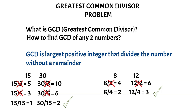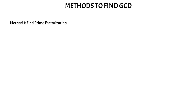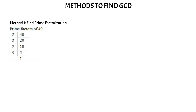Now having understood what a GCD is, let us try to see what are the different methods using which we can find GCD between any two numbers. The first method is to find the prime factorization of that number. We can break a particular number into its prime factorization and after that see what are the common factors between the two numbers. For example, the prime factorization of 40: you divide 40 by 2, then 20 by 2, then 10 by 2, and in the end the remainder is 5. So the prime factorization of 40 is 2 × 2 × 2 × 5, which is 2³ × 5.